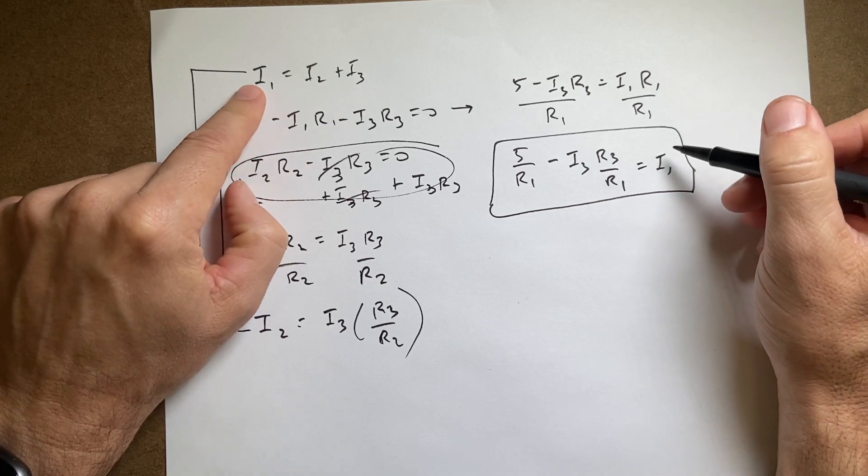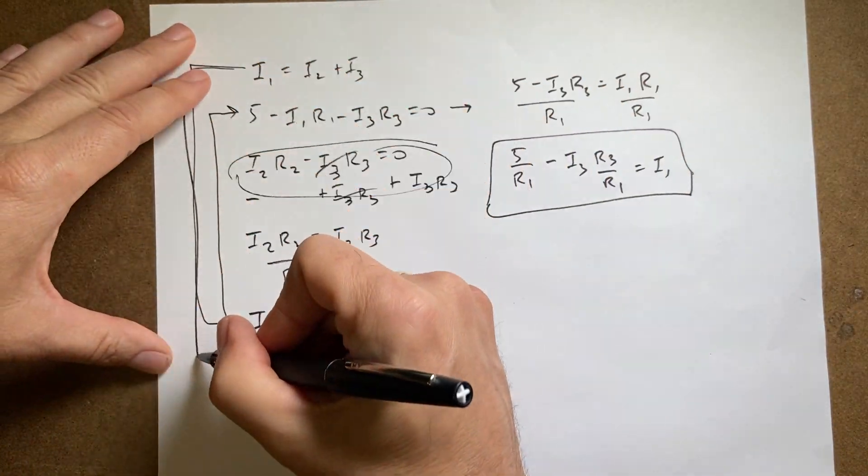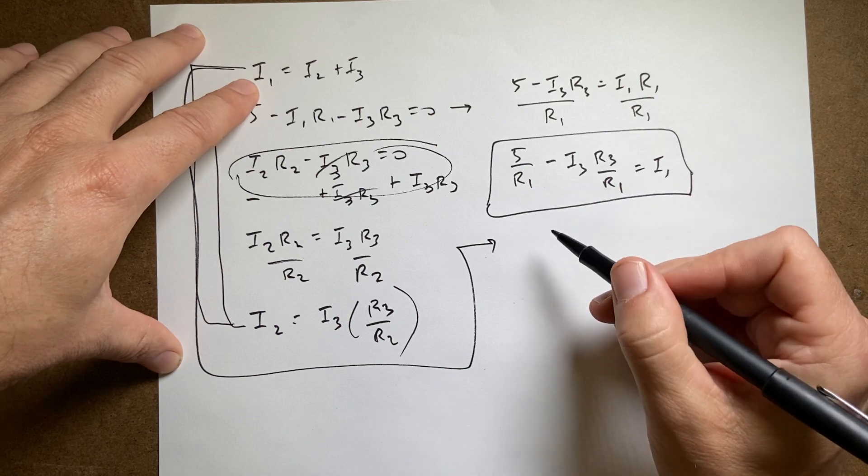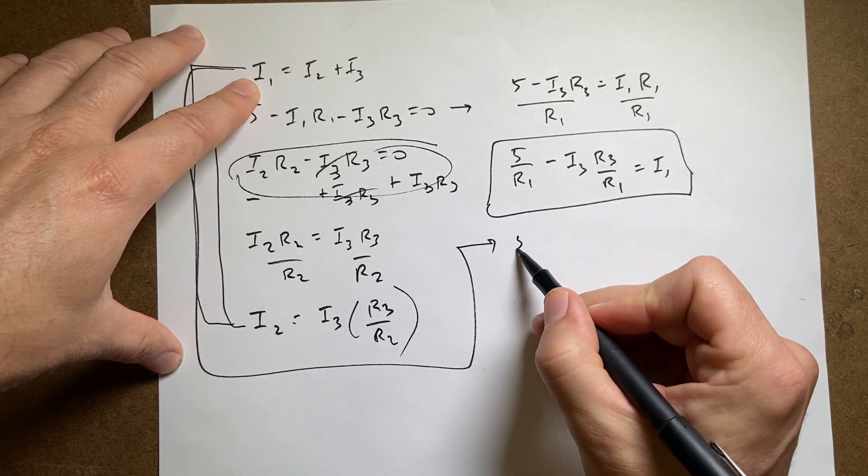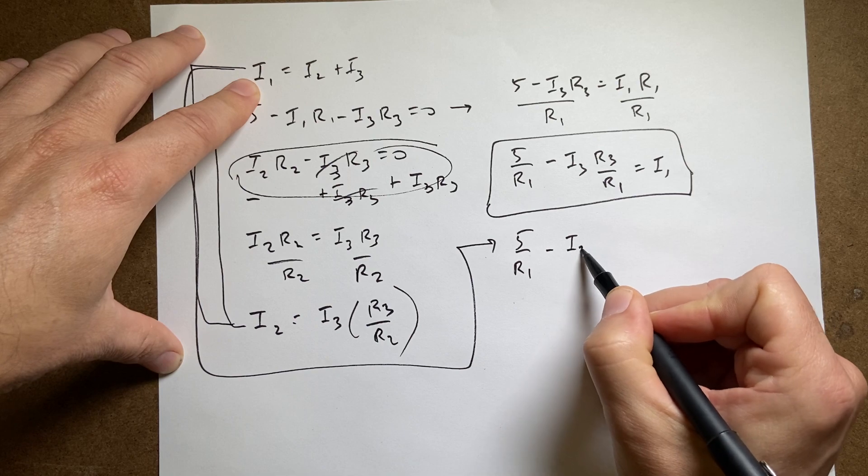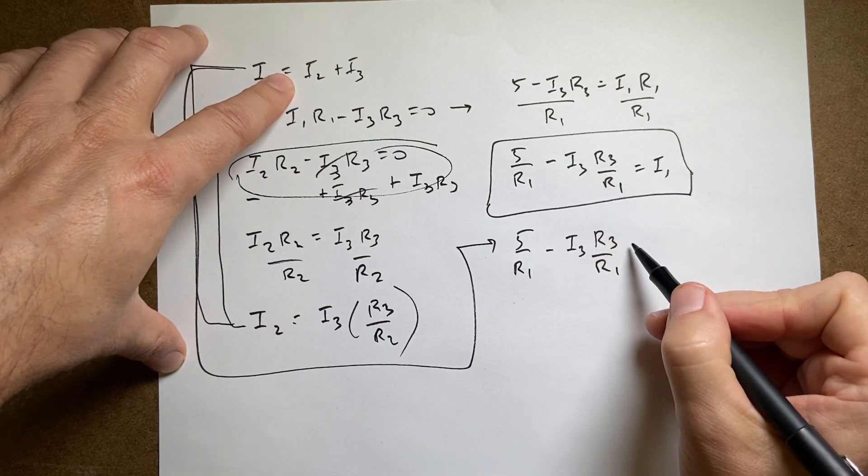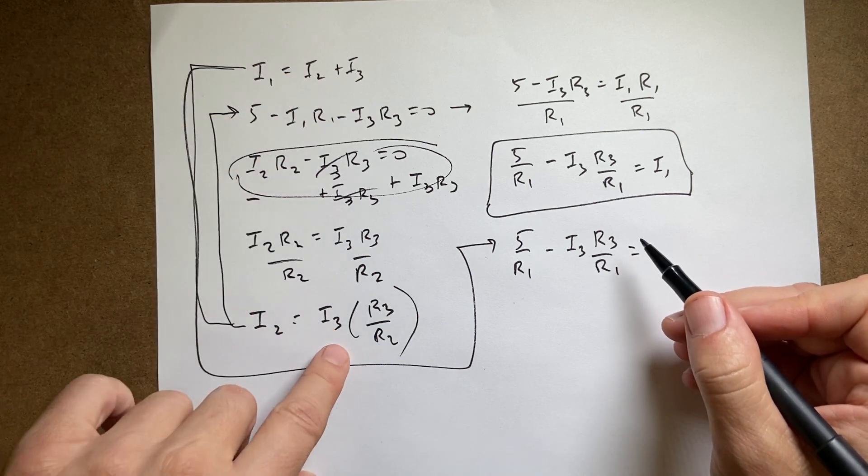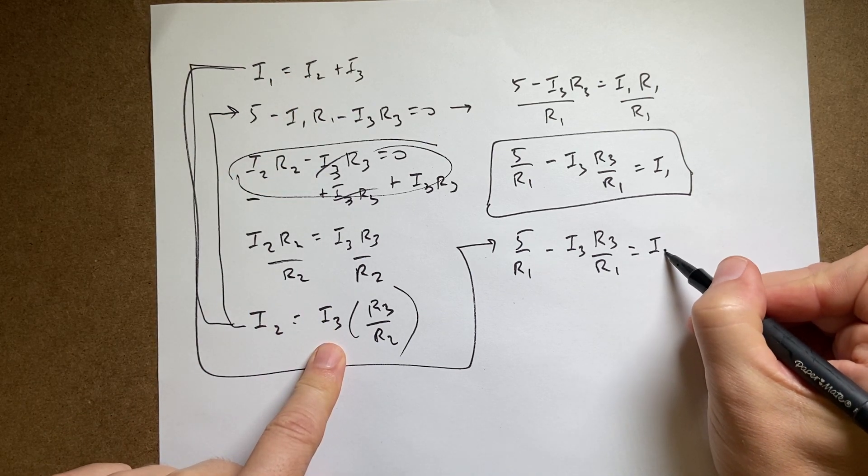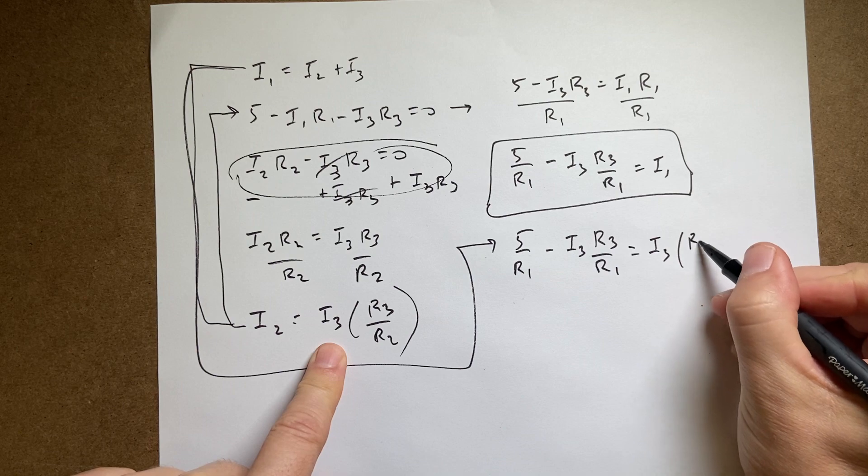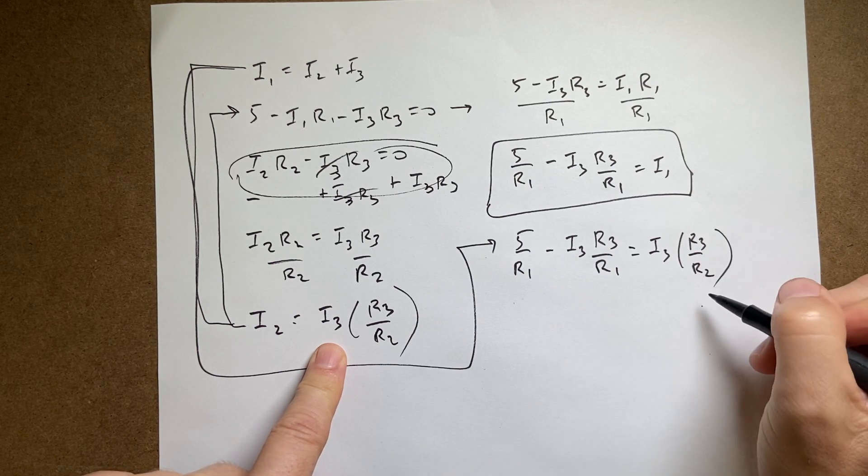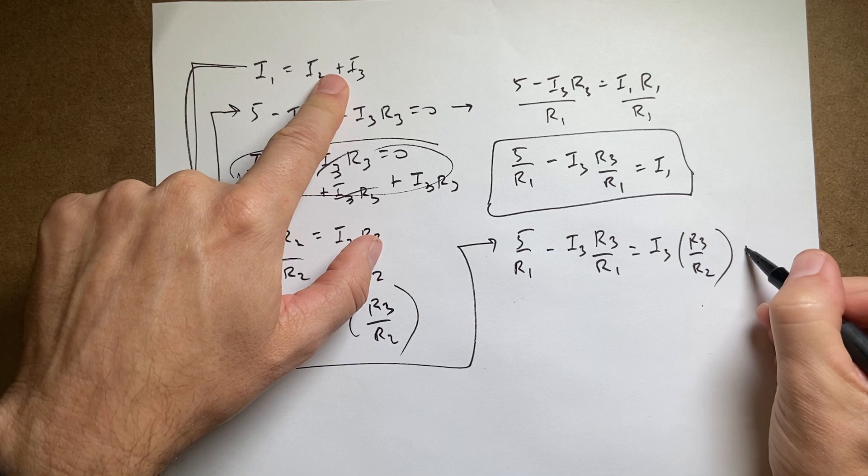So now I'm gonna rewrite this equation. So instead of I1 I'm gonna put this. So 5 over R1 minus I3 R3 over R1 equals I2, which is this, I3 times R3 over R2. That's it. And then I have plus I3.